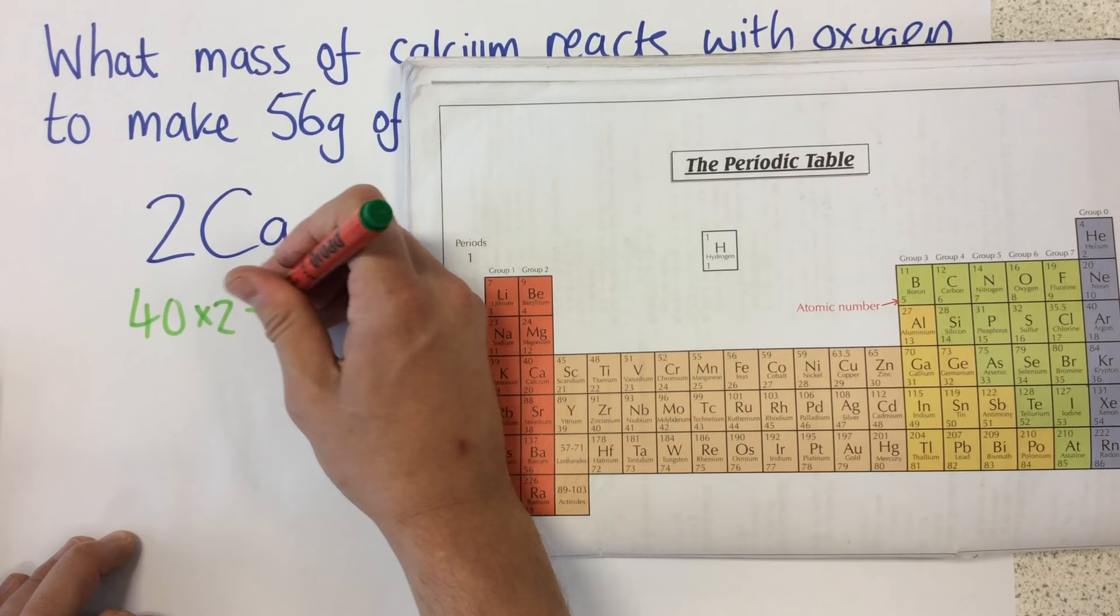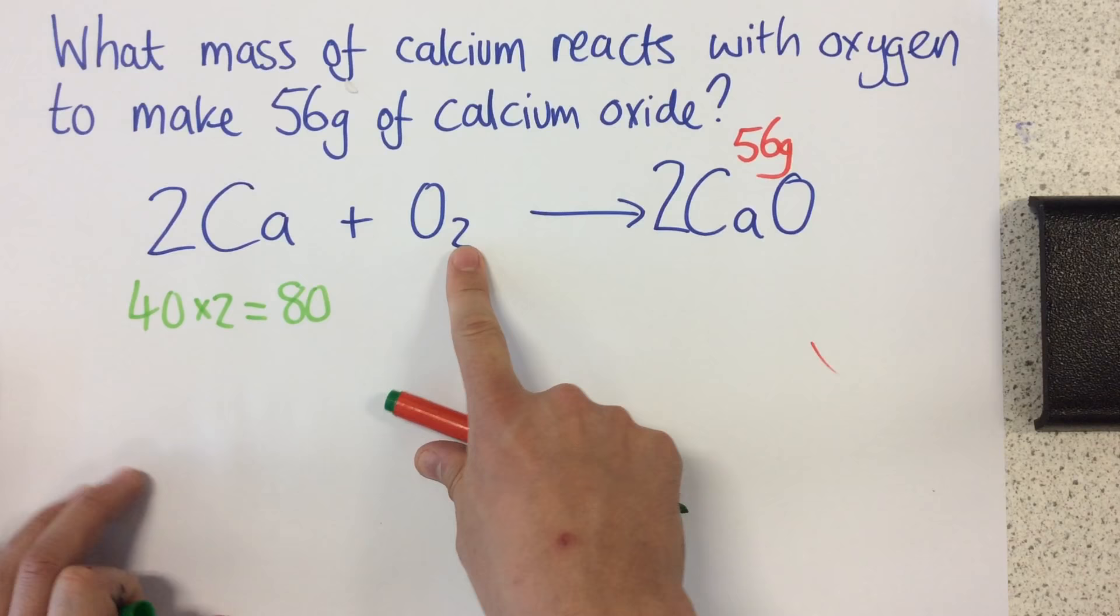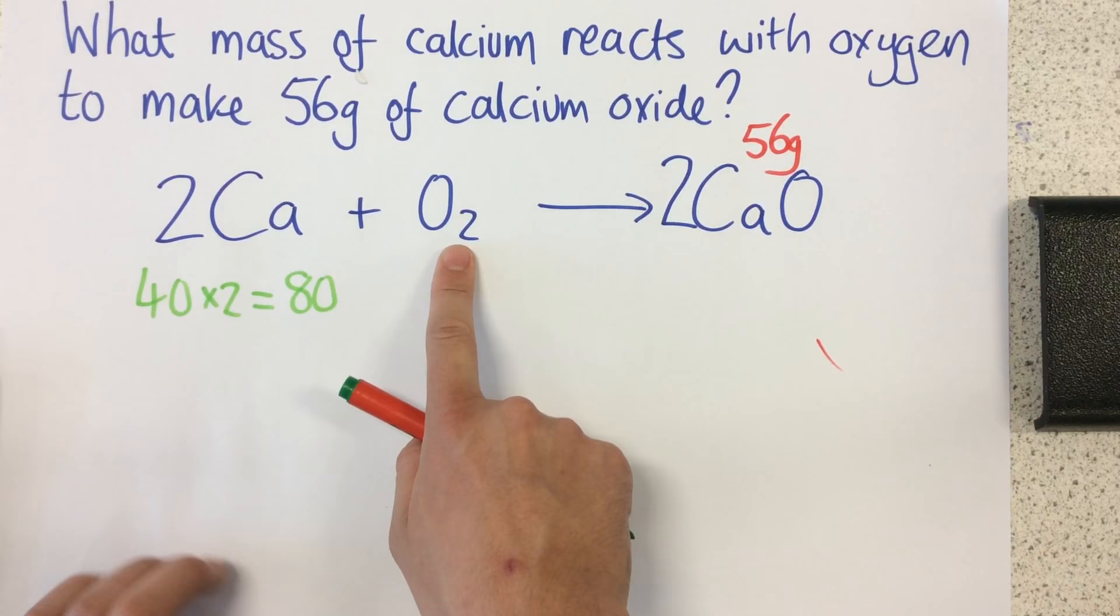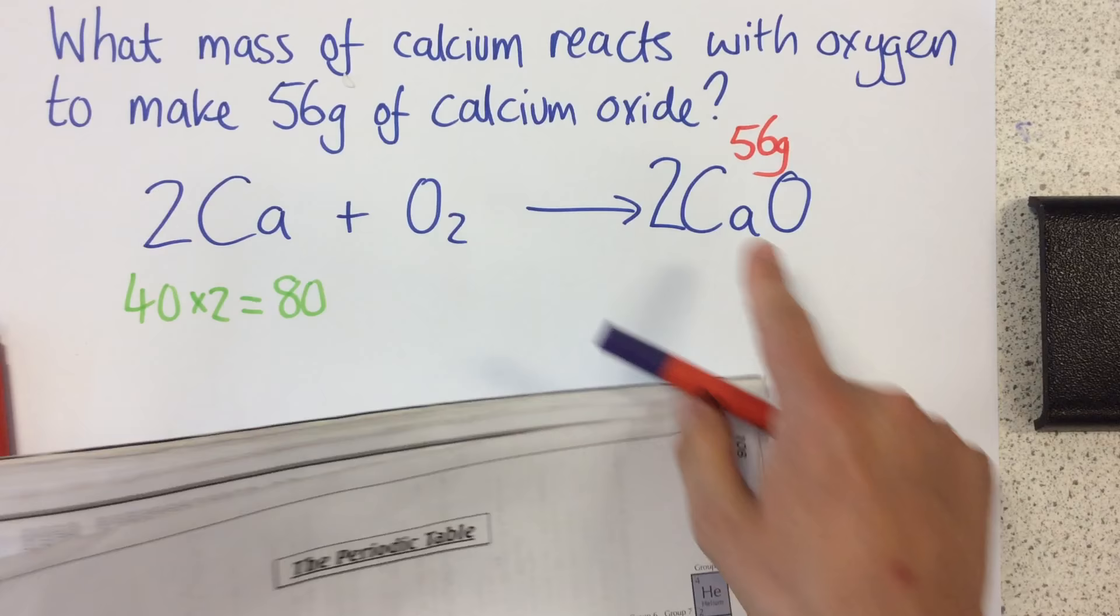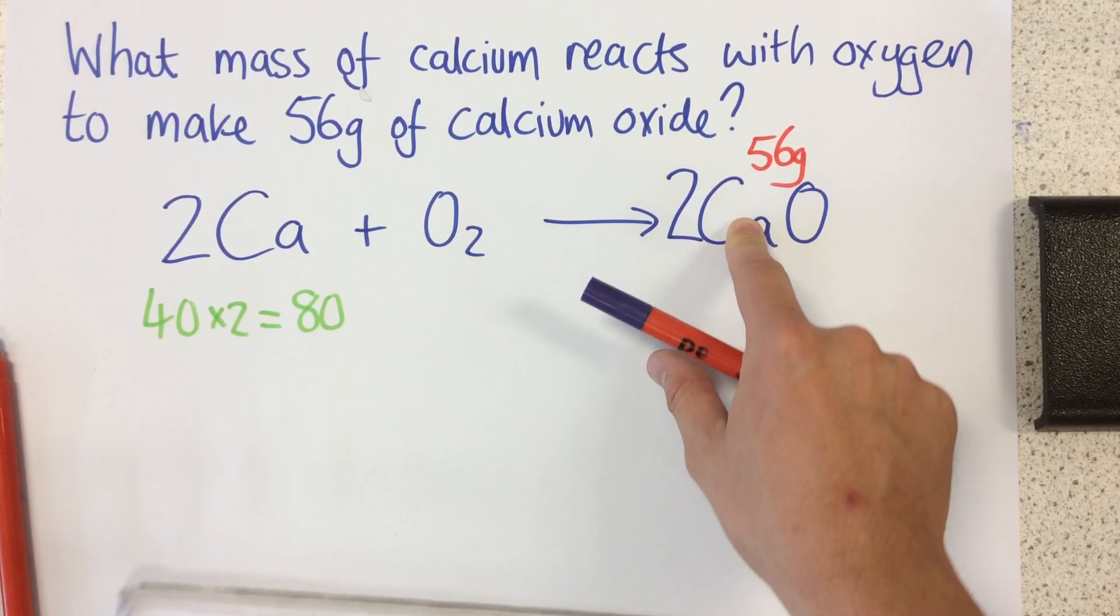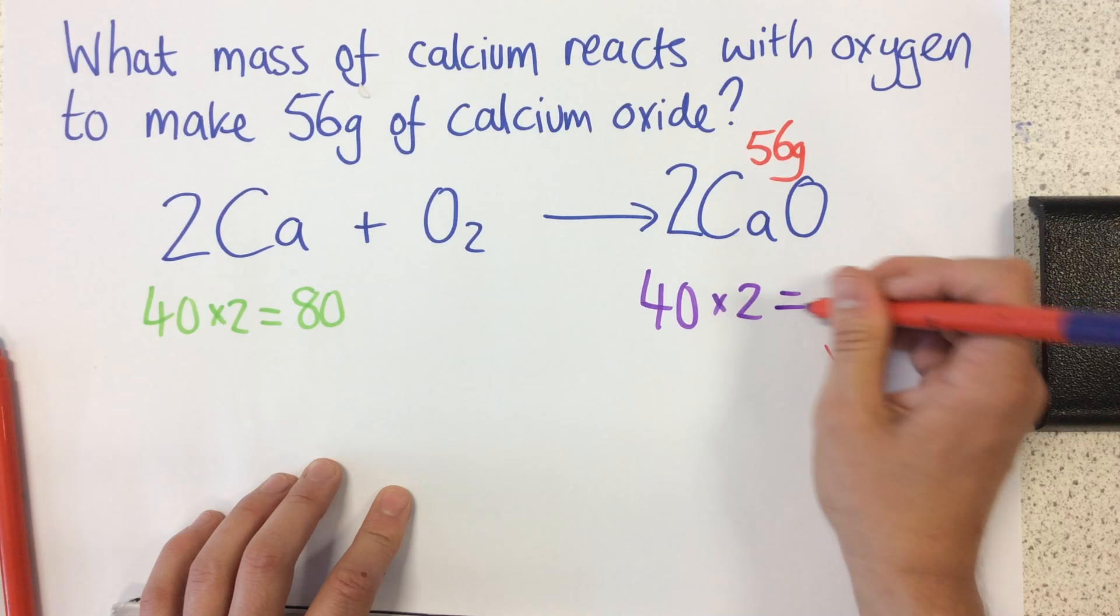Now I'm not too interested about the oxygen, I'm only interested in the calcium and the calcium oxide, so I'm not going to look at that oxygen for this question. What I'm then going to do is the same for this here. So I can see that, again, my calcium's relative atomic mass is 40, and I've got two of these, so for calcium we've got 80 here.